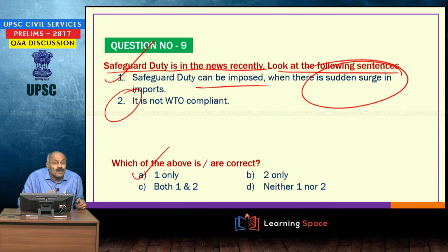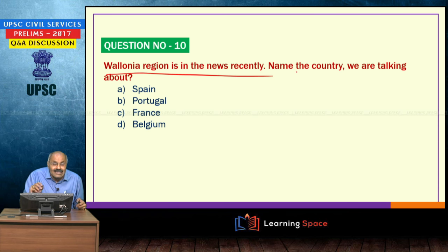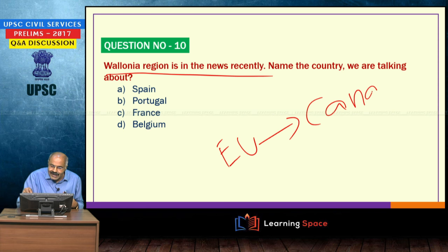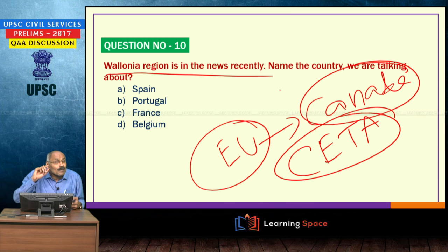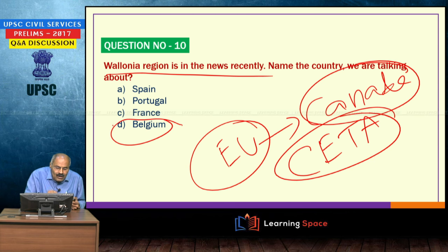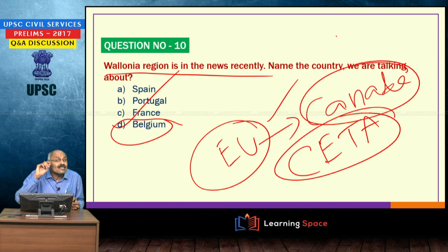Wallonia region is in the news recently. The European Union recently concluded a free trade agreement with Canada, properly known as CETA. During the process, one particular region's parliament did not pass it for some time — that Wallonia region is in Belgium. The EU and Canada have concluded a free trade pact known as CETA.